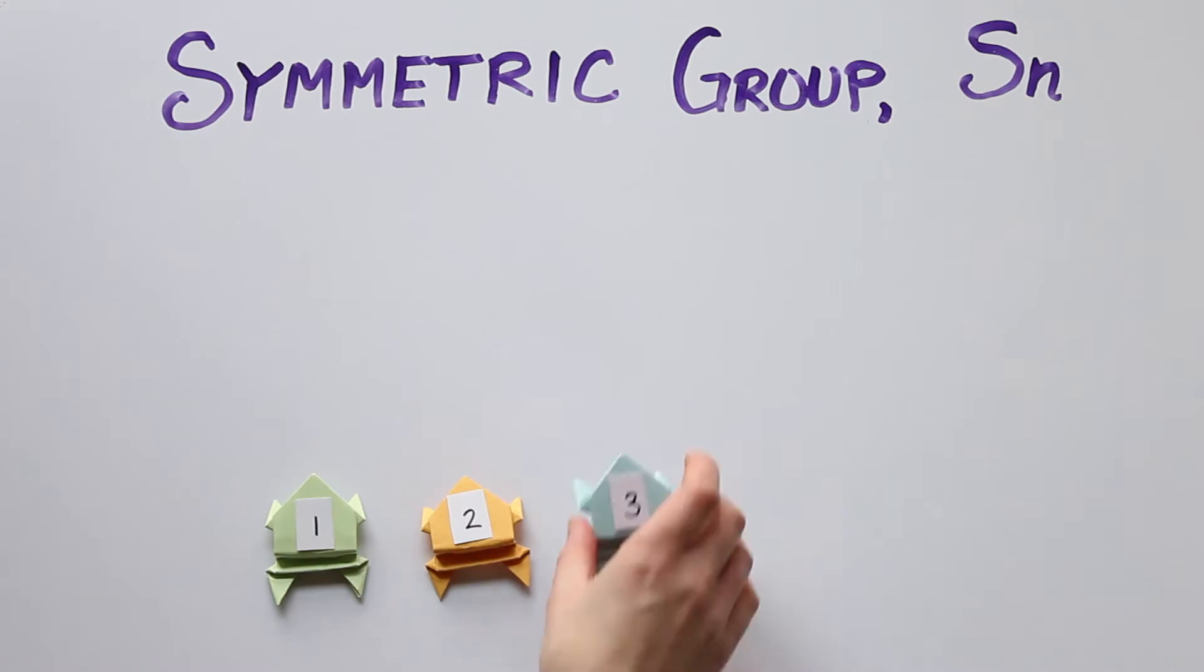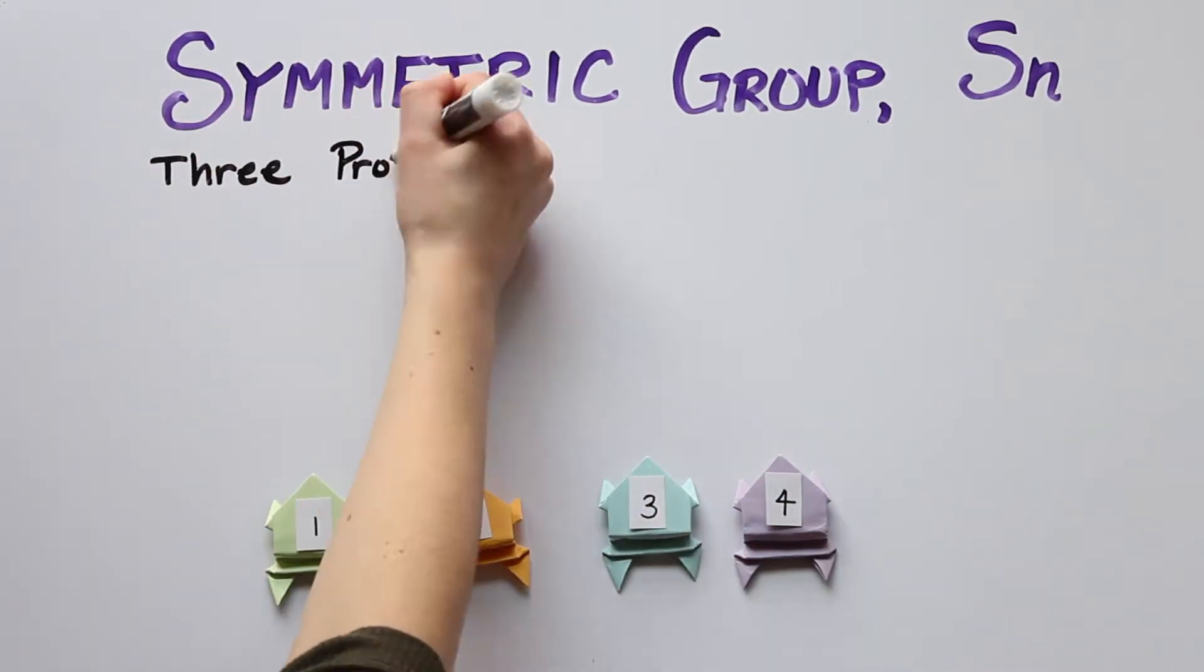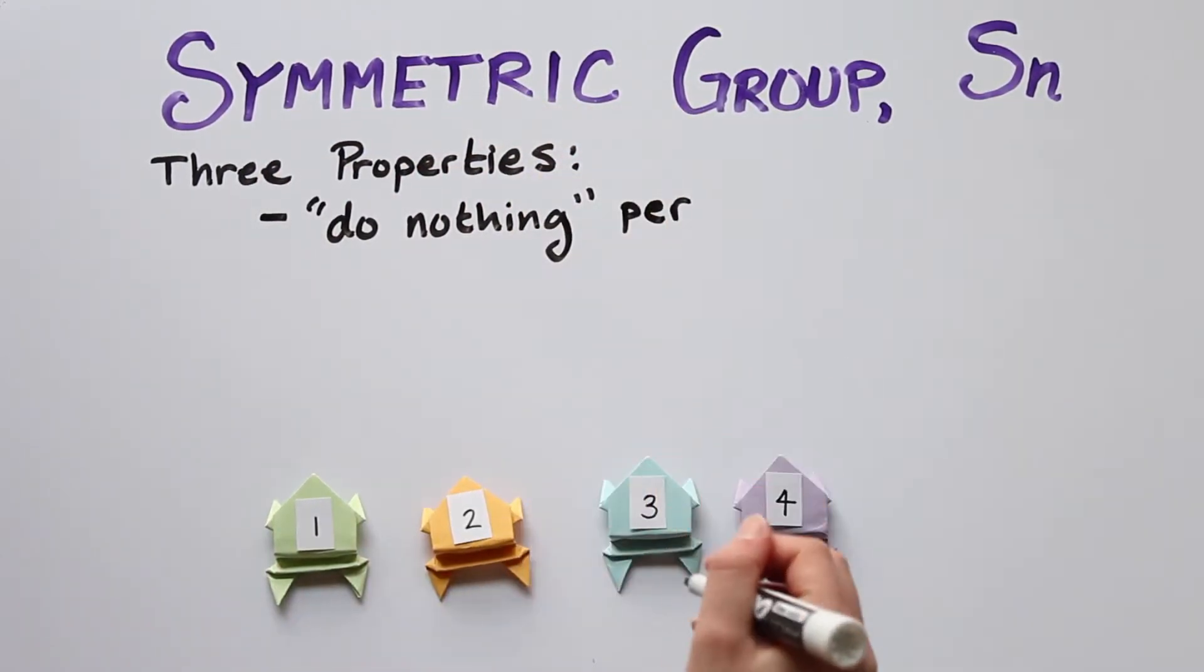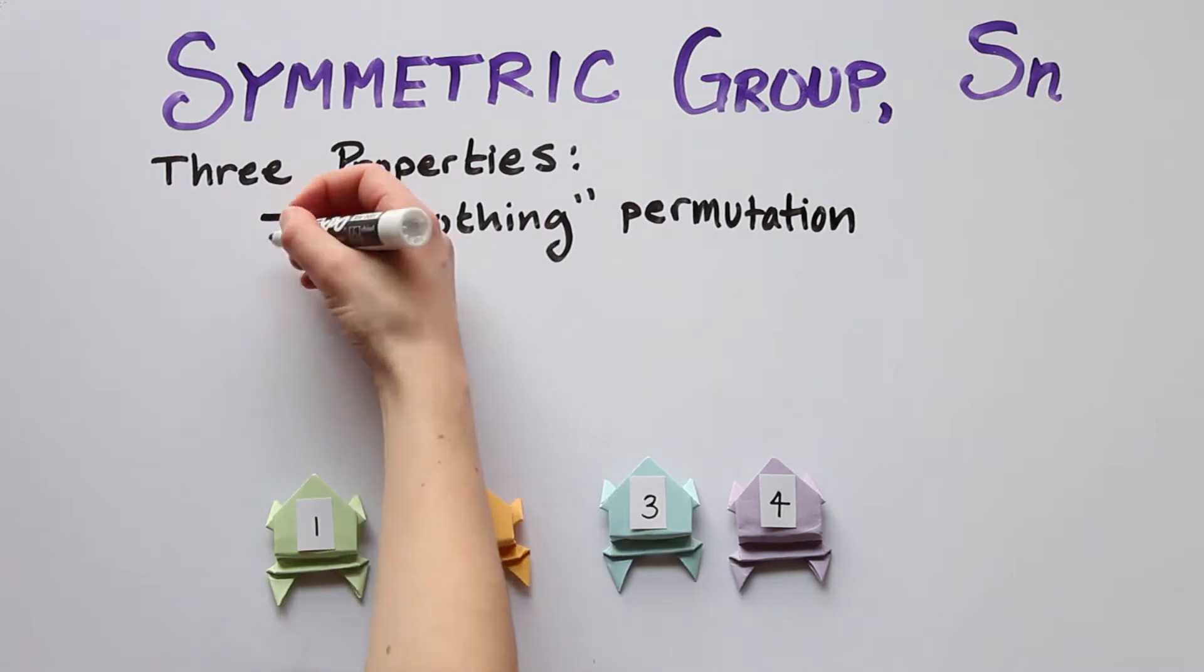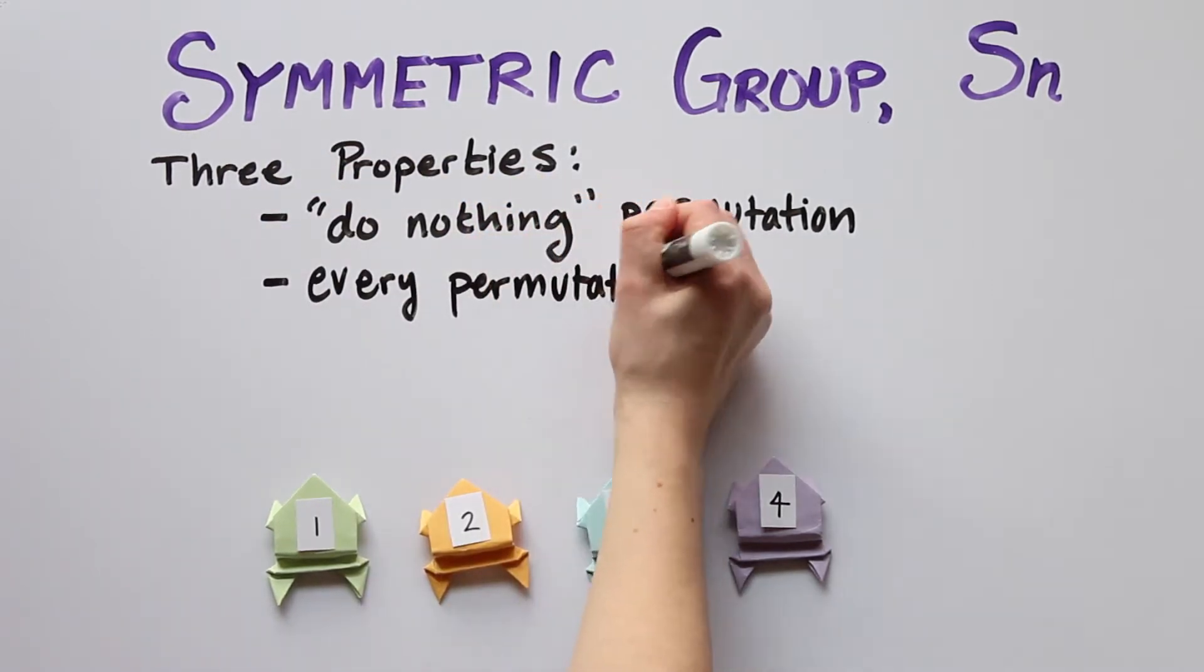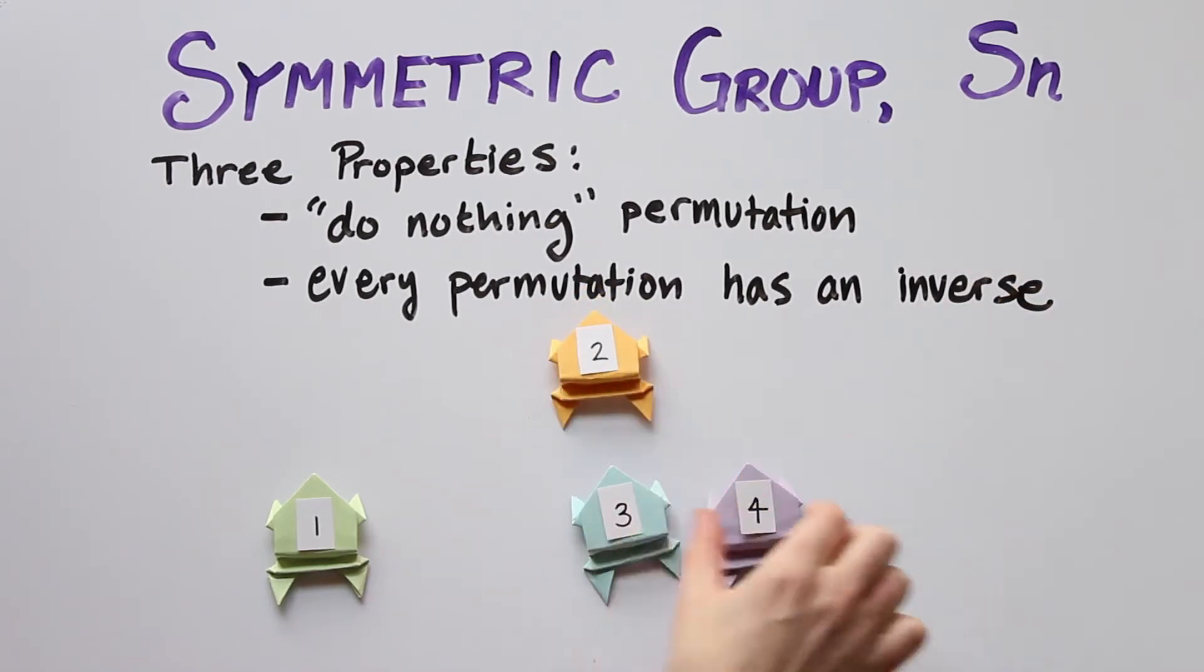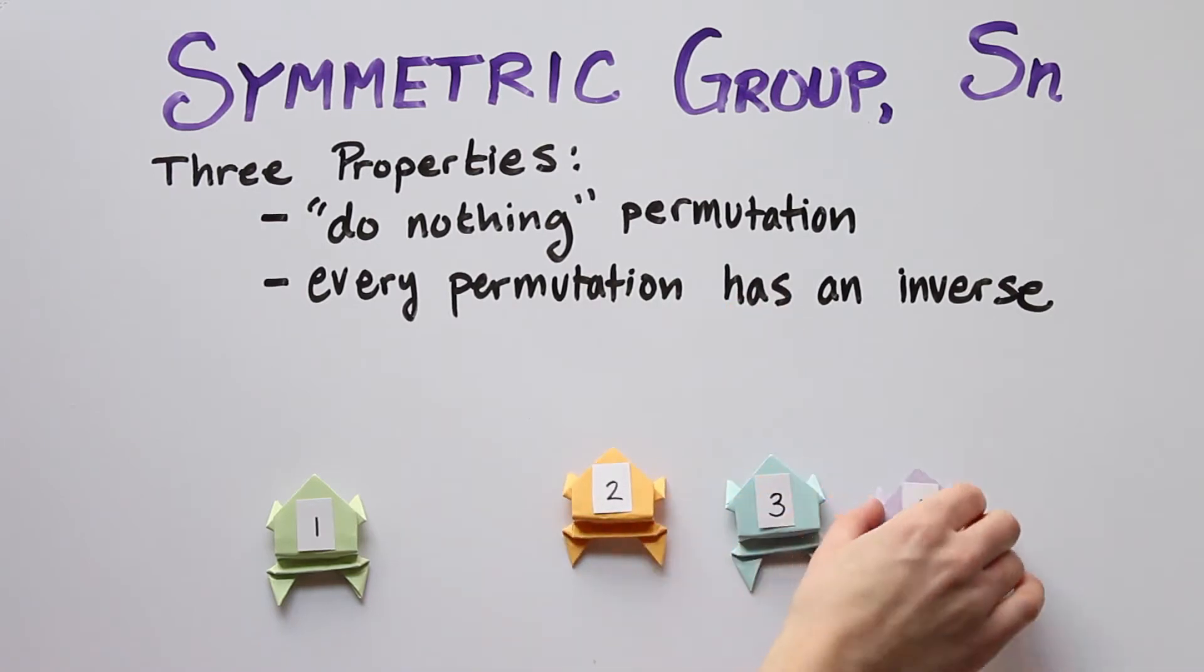All permutations of n elements together make up the symmetric group, denoted Sn. We call this collection a group because it satisfies three specific properties. First, there is a do nothing permutation. This corresponds to the original order of the frogs. Second, for every permutation, there is an inverse permutation, which brings us back to the original order. For instance, if I cycle frogs 2, 3, and 4, then I can cycle them in the other direction to get them back in the original order.